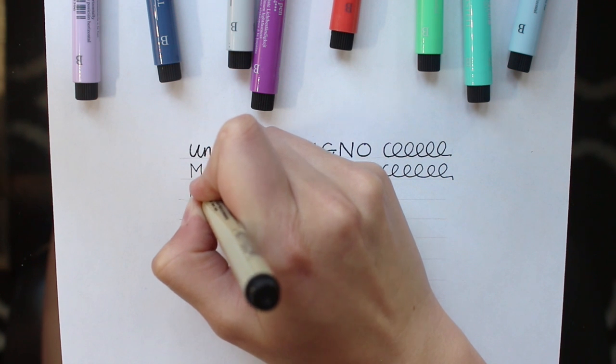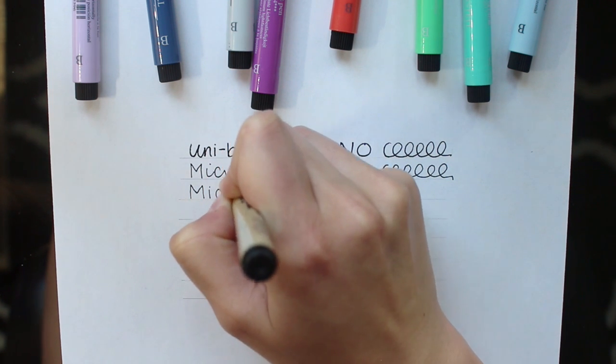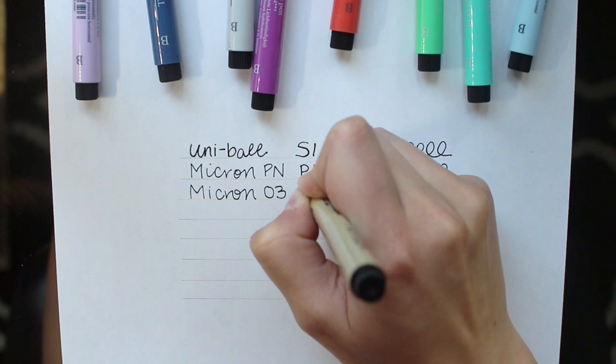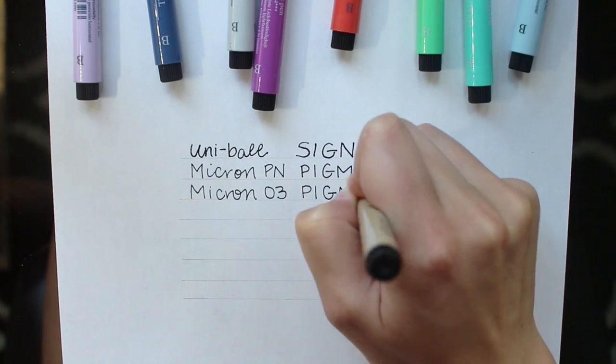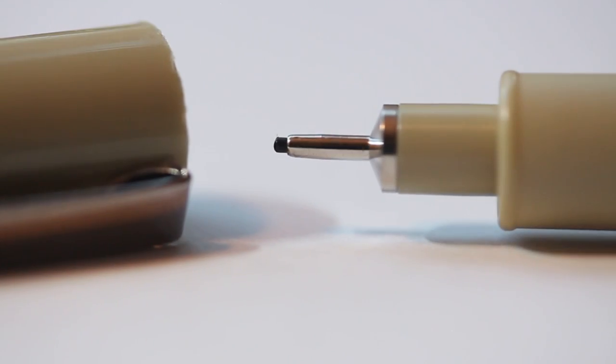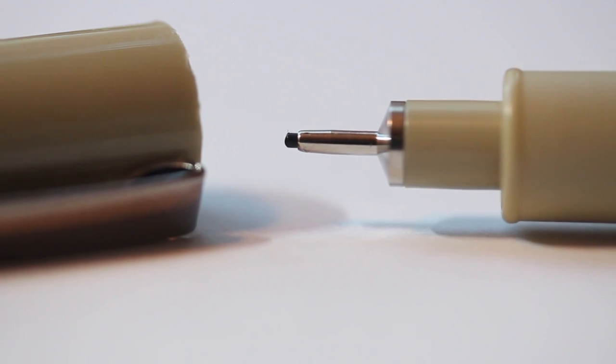Next we have the Pigma Micron 03 by Sakura. This tip is 0.3 millimeters wide. Again, smooth ink application, but what I don't like about this is it has a cornered tip which makes it harder to create a smooth handwriting style because the pen must be held at almost a 90 degree angle.